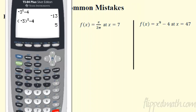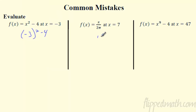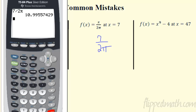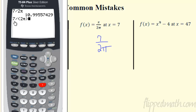Another common mistake: if x is 7 and you want to divide 7 by 2π, a lot of people type 7 divided by 2 times π — wrong. That is 7 divided by 2, then multiplied by π — a very different answer. What you want is 7 divided by the quantity 2π, so you must use parentheses: 7 ÷ (2π). Parentheses are hugely important.